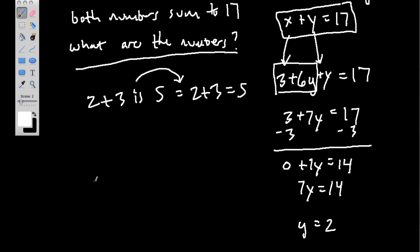What about x? Well, we knew that x plus y is 17. So if y is 2, then x plus 2 has to equal 17. So then x can only be 15. 15 plus 2 equals 17.